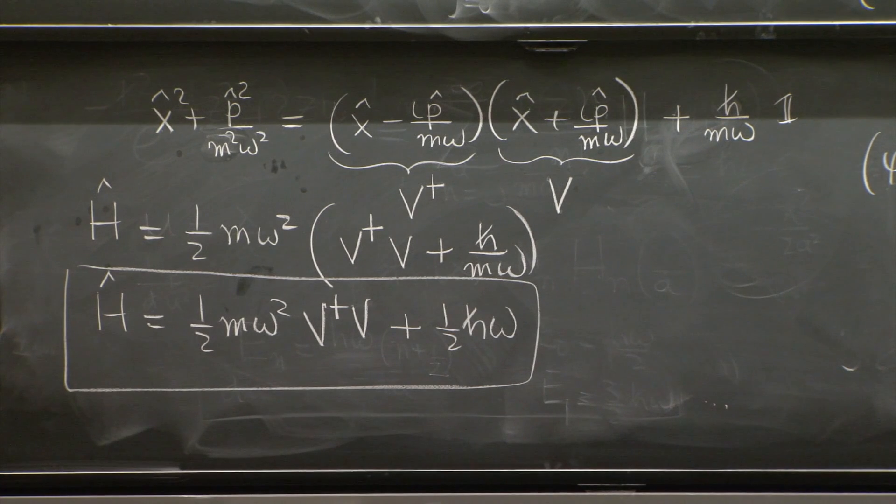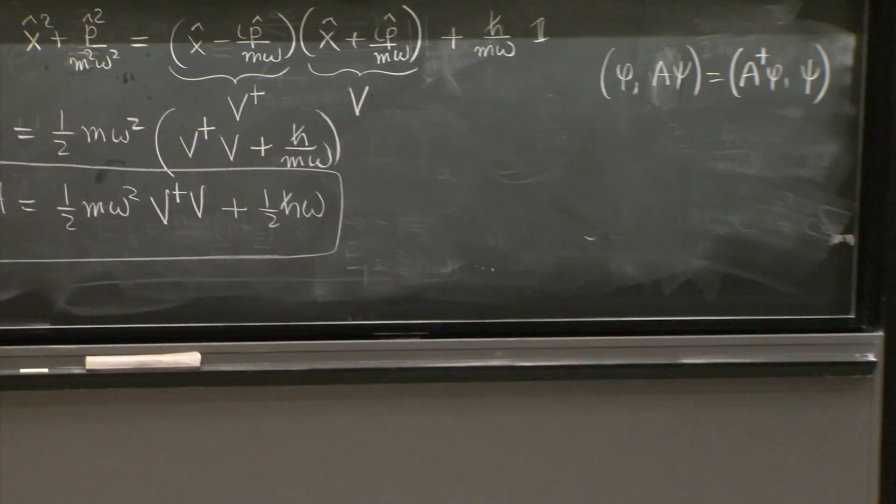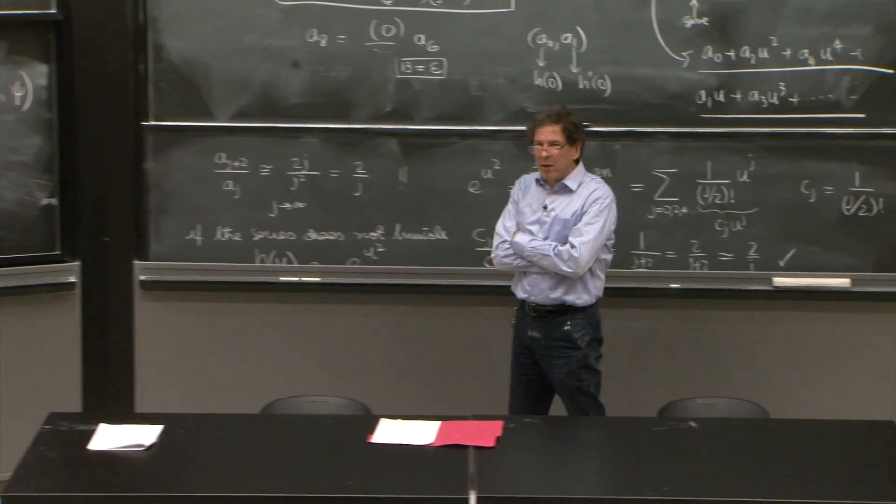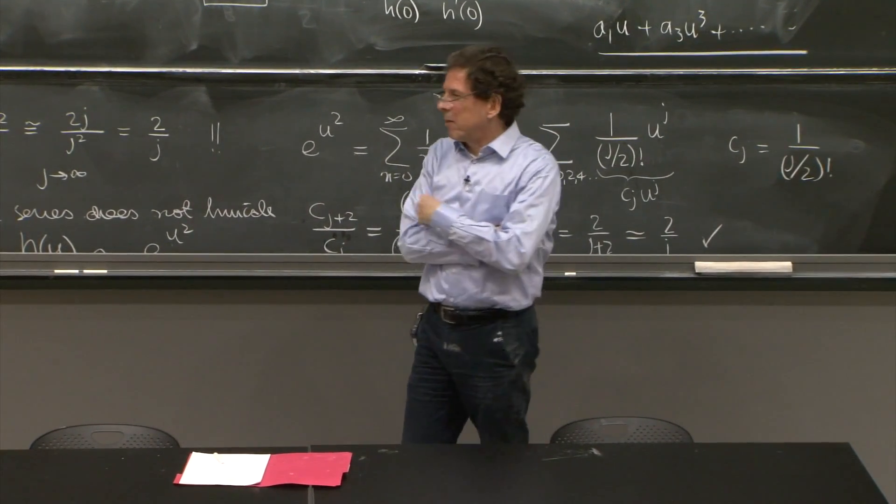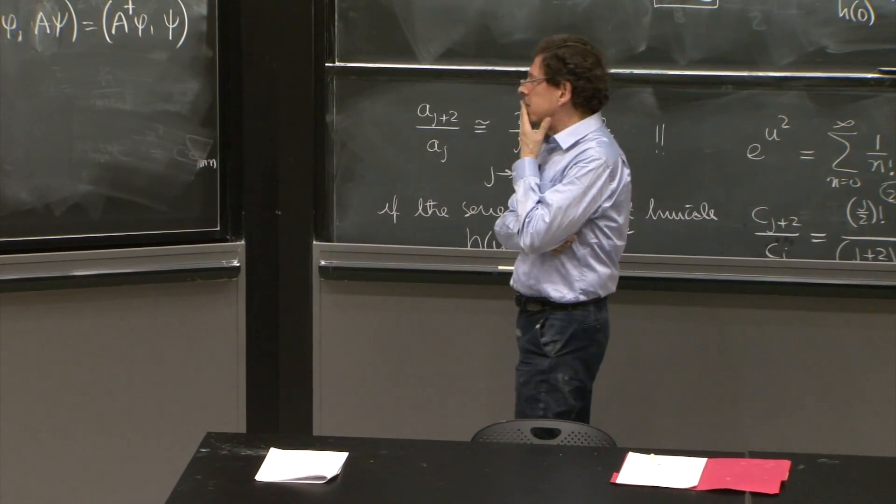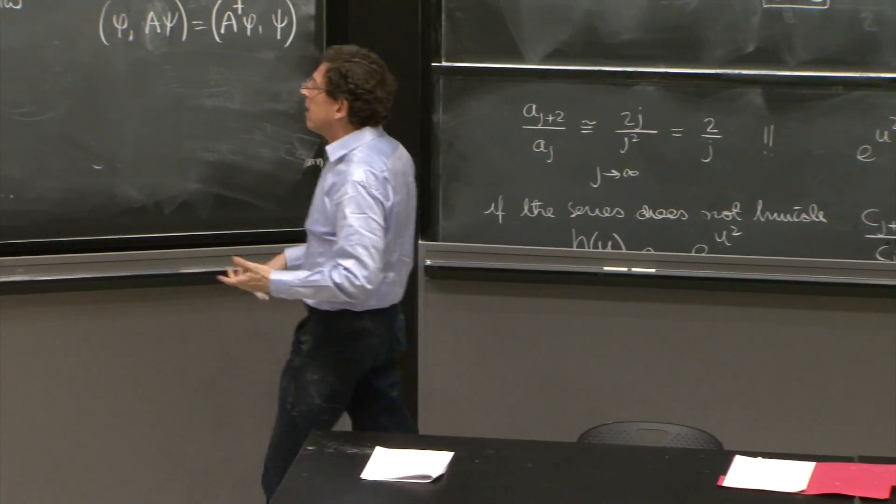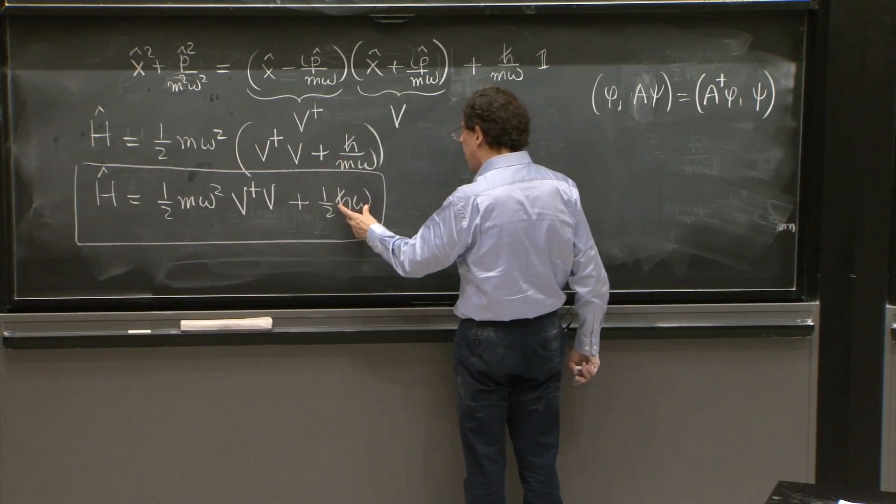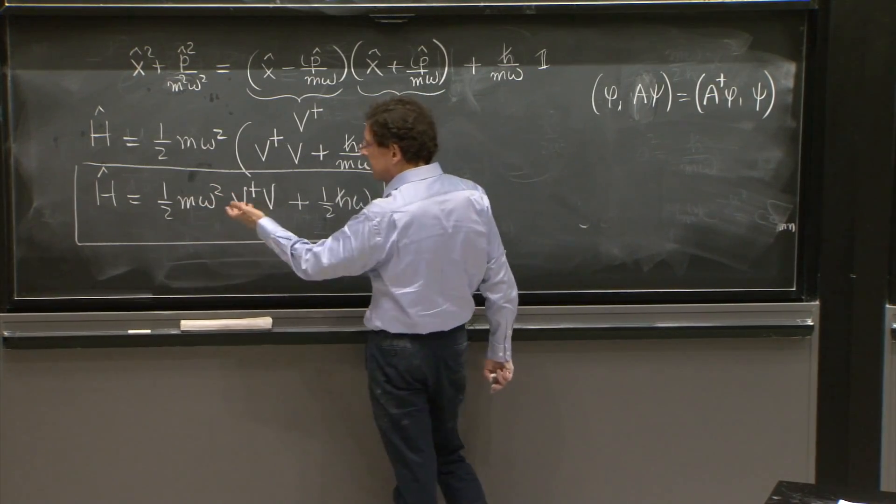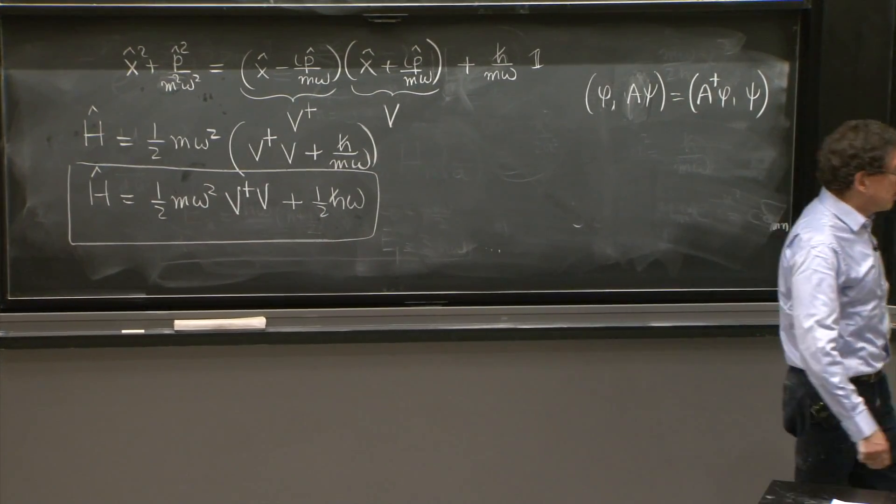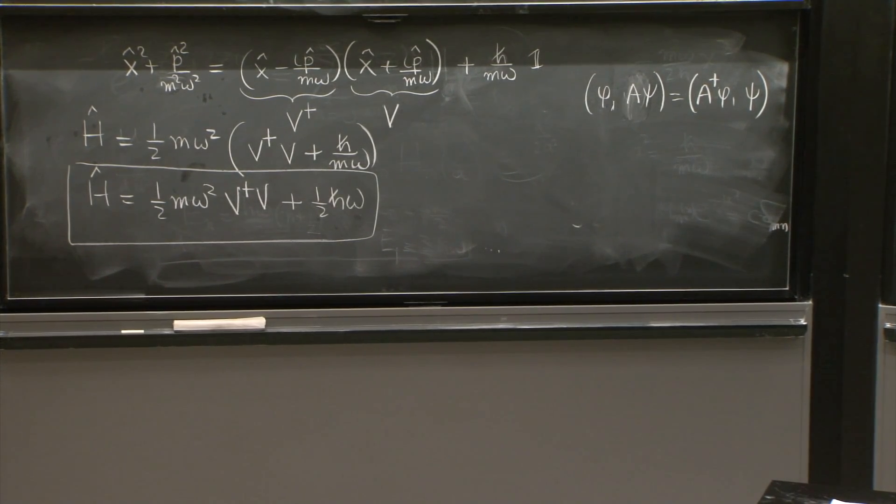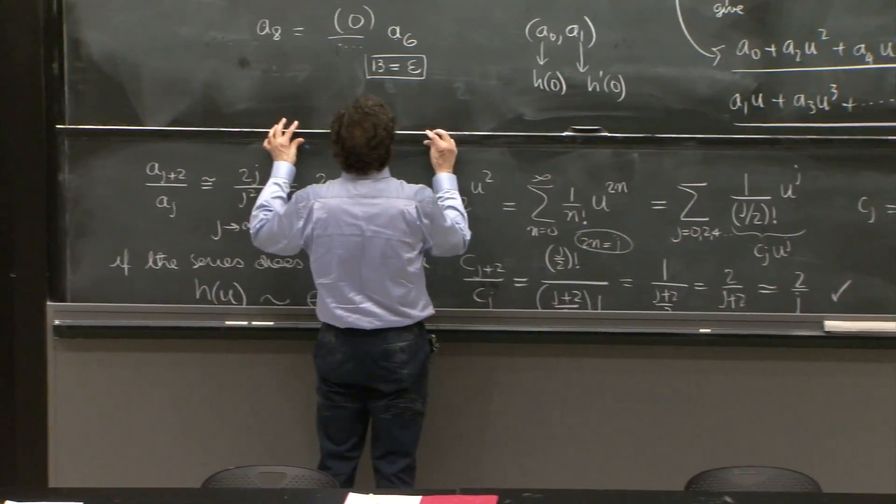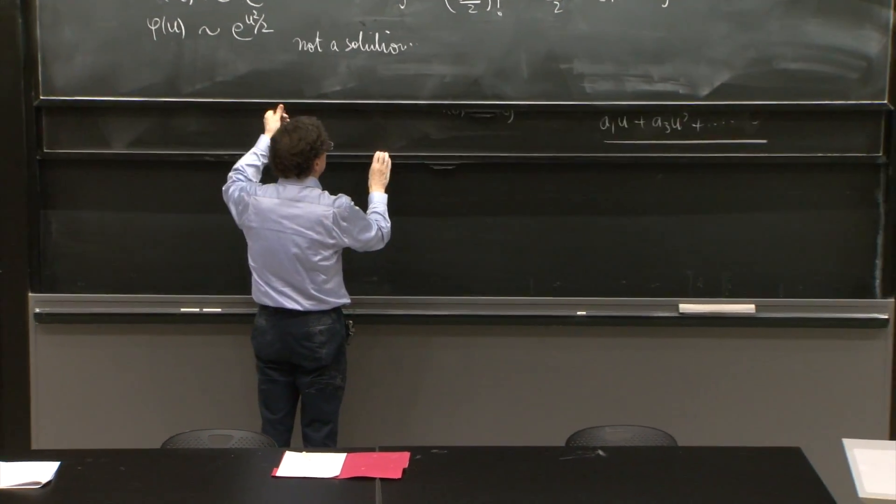So the v's, however, have units. And you probably are aware that we like things without units, so that we can see the units better. This term is perfectly nice. It's a number added to the Hamiltonian. It's h omega. It has units of energy, but this is still a little messy. So let's try to clean up those v's. And the way I'll do it is by computing their commutator to begin with.